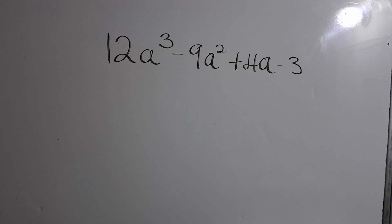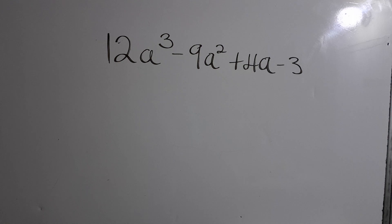Welcome back to Lennox Benny's channel. Today we'll be looking at factorizing by grouping — this is part one. We have 12a³ minus 9a² plus 4a minus 3.